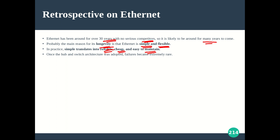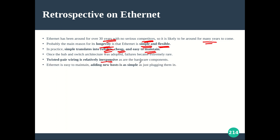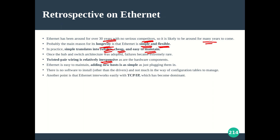Twisted pair wiring is relatively inexpensive, which makes the technology as a whole inexpensive, including the hardware components. Ethernet is easy to maintain because adding a new host is as simple as plugging it in — there is no special software to install beyond basic drivers and no complex configuration tables. Ethernet also inter-works easily with the TCP/IP model, and with TCP/IP handling the transport and network layers, it is a very powerful combination.